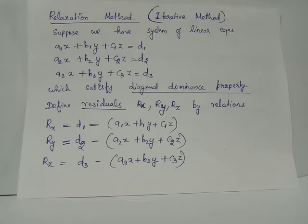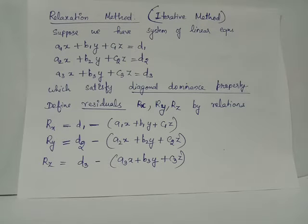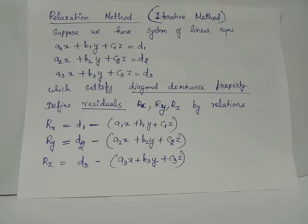We observe that when delta x equals 1, the change in residual rx is delta rx equals minus a1, the change in ry is delta ry equals minus a2, and the change in rz is delta rz equals minus a3. Now let us consider the next case: delta y equals 1, keeping x and z as constants equated to zero.